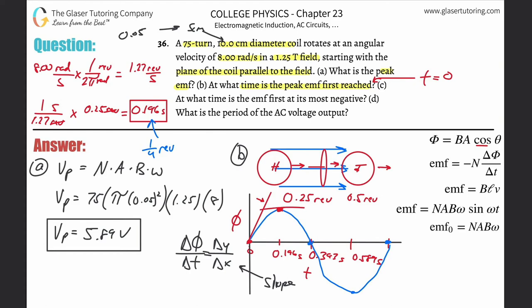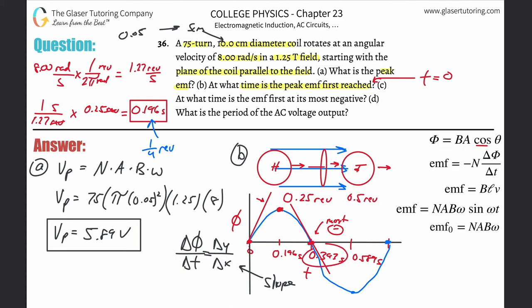For part (c): when is the EMF first most negative? That's the steepest negative slope on the graph. It's not at the top or the bottom — it's at the point where the graph crosses zero going downward through the negative region, which is at t ≈ 0.393 seconds. That's where the most negative slope occurs, giving the most negative EMF.